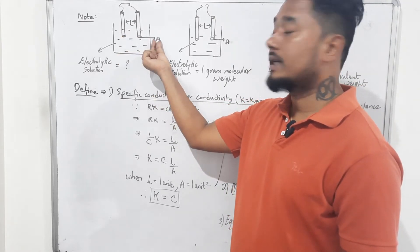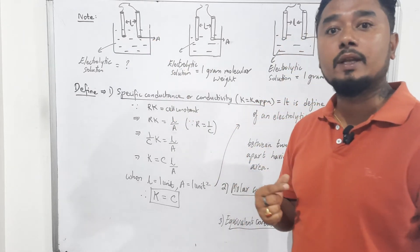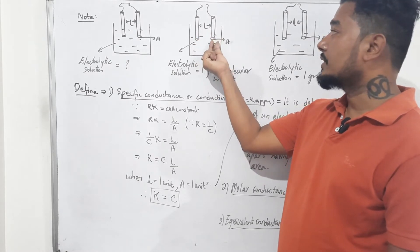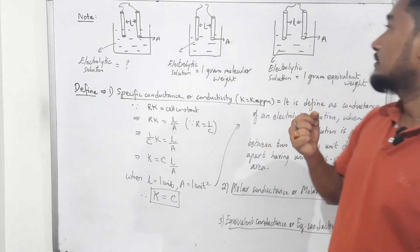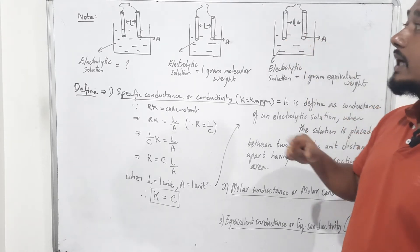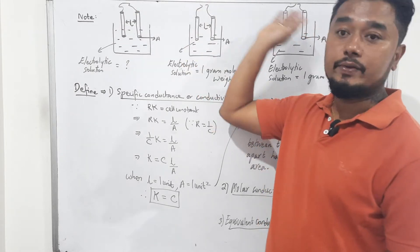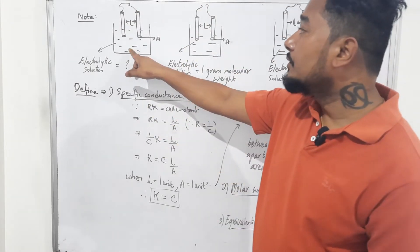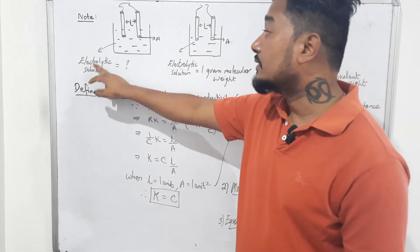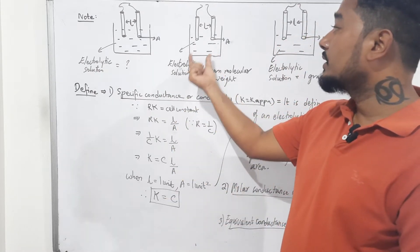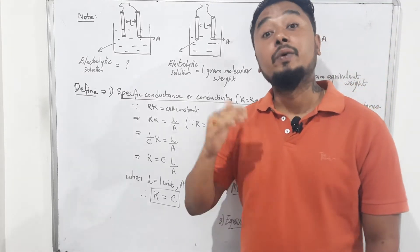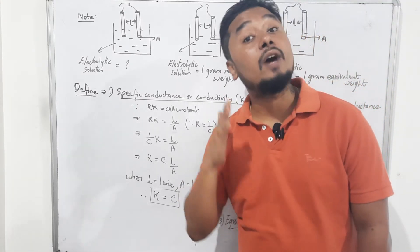The circular base is called the cross-section area of the electrode, with formula π r². This distance between the two electrodes is L, and the cross-section area of the electrode is A. All of them are connected with a battery, and whatever solution we put inside is called the electrolytic cell.